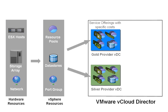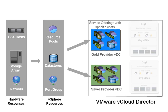In this example, I have a gold and silver provider vDCs, with a gold offering built out of resource pools with high CPU and memory shares and data stores on SAS disks. The provider vDCs are used as the source of resource allocation to individual tenants.